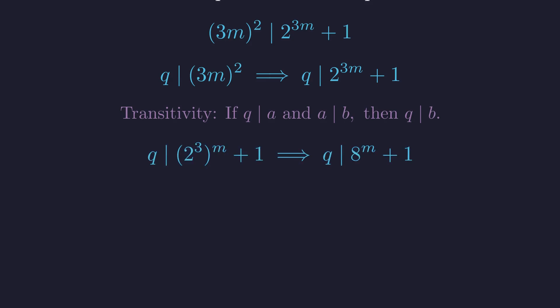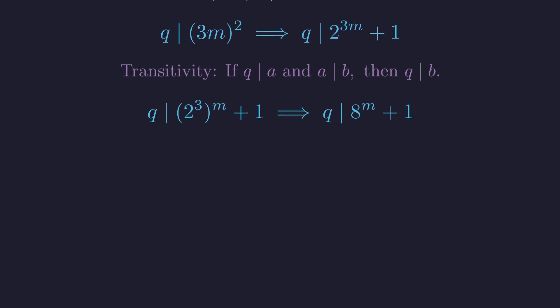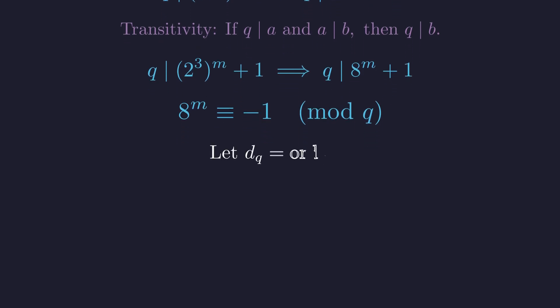We can rewrite 2 to the 3m as 8 to the m, making the relationship clearer. q must divide 8 to the m plus 1. This means 8 to the m is congruent to negative 1 modulo q. Again, we'll use the order, this time of 8 modulo q, and we'll call it d sub q.